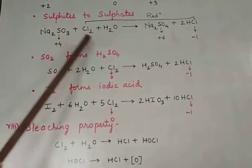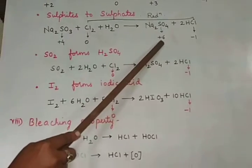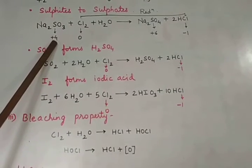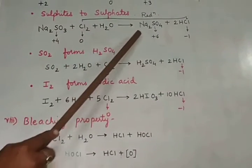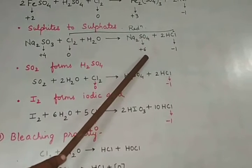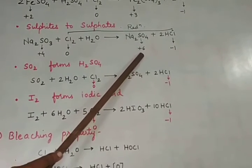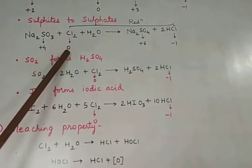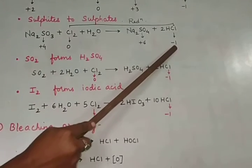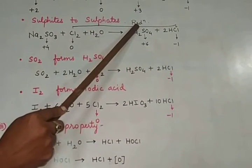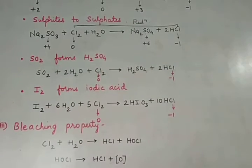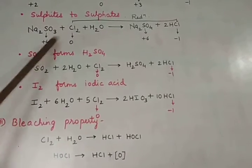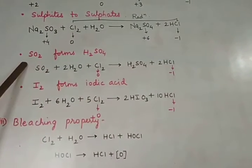Chlorine converts sulfites to sulfates. Sodium sulfite (Na2SO3) forms sodium sulfate (Na2SO4). In sodium sulfite, sulfur has oxidation state plus four; chlorine has zero. When sodium sulfate is formed, sulfur has oxidation state plus six, and Cl goes to minus one. So Cl undergoes reduction from zero to minus one, acting as oxidizing agent, while sulfur undergoes oxidation.